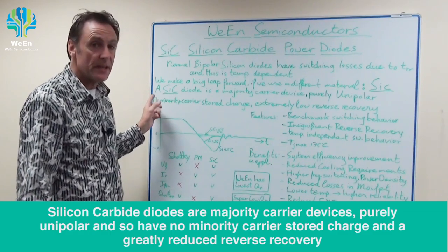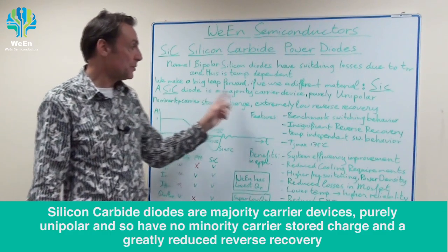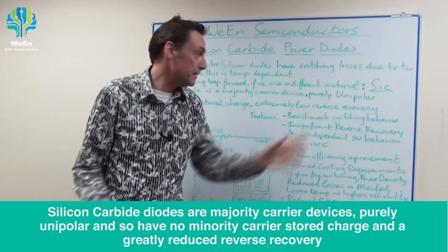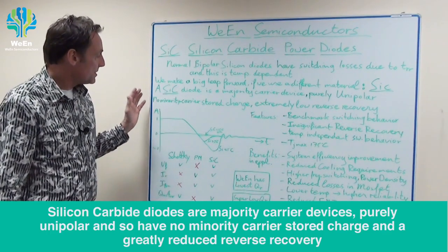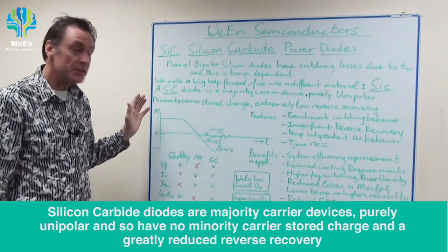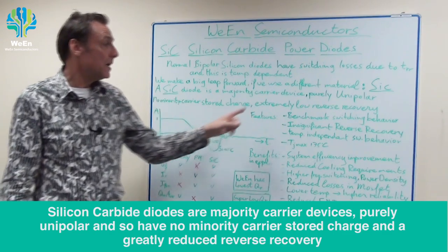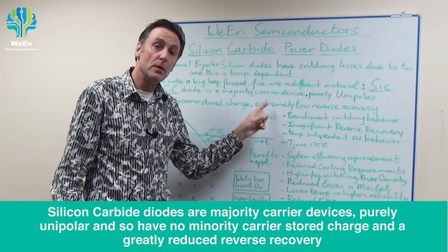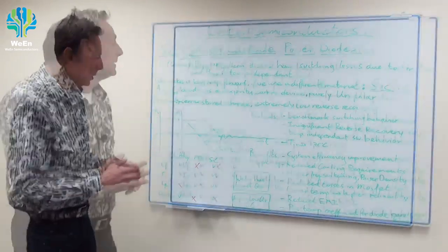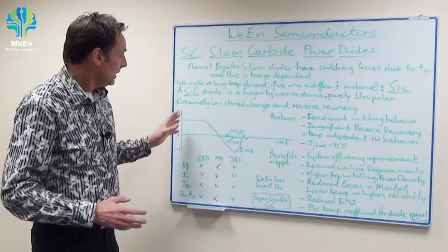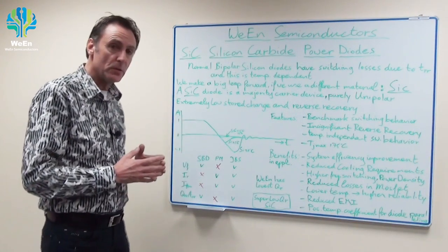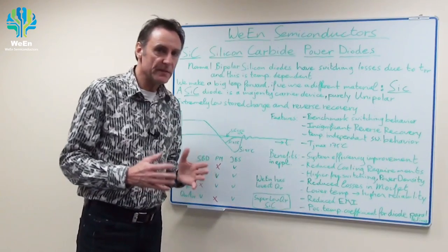A silicon carbide diode is a majority carrier device; it is purely unipolar. So there is no minority carrier stored charge and an extremely low reverse recovery. Let's have a look at this graph where we show the switching off of the diode.